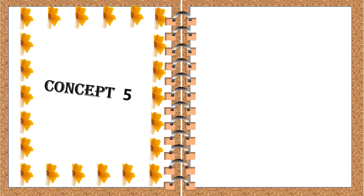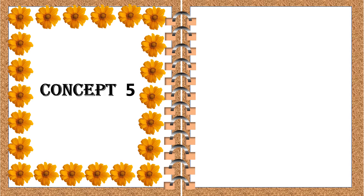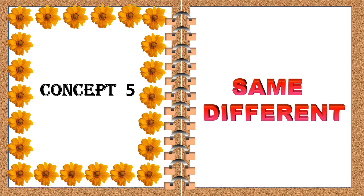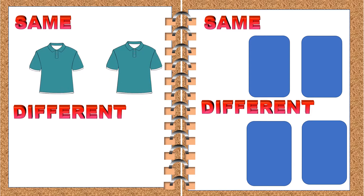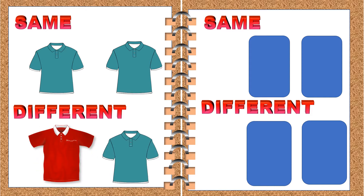Let's move on to another concept. The fifth concept is same and different. Let's see some of the examples. These two shirts are same — same in color and same in size. These two shirts are different. They are different in color as well as in size.